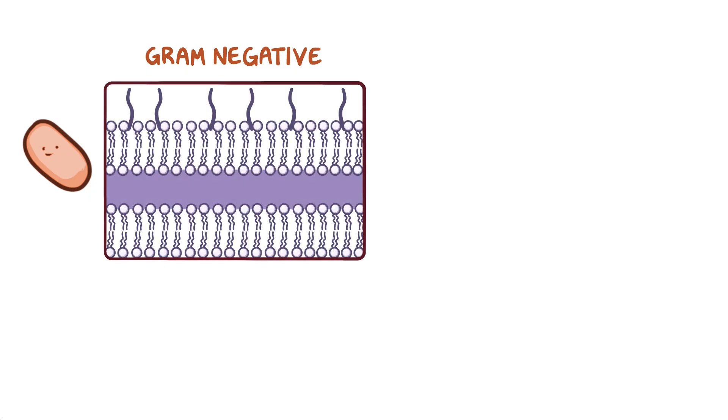Coxiella burnetii is gram-negative, meaning that its cell wall has a thin peptidoglycan layer so it cannot retain crystal violet stain. Instead, it stains pink with safranin dye used during gram staining, so it looks like a little pink rod under the microscope.